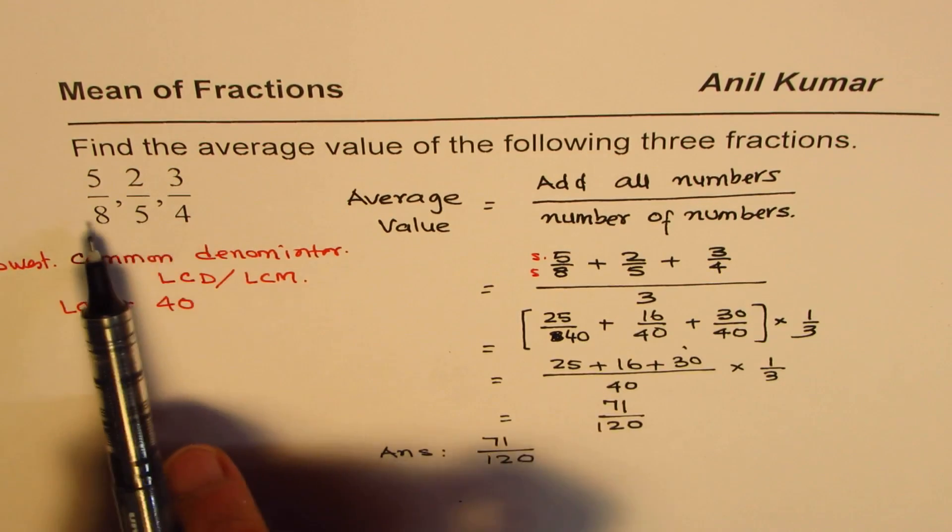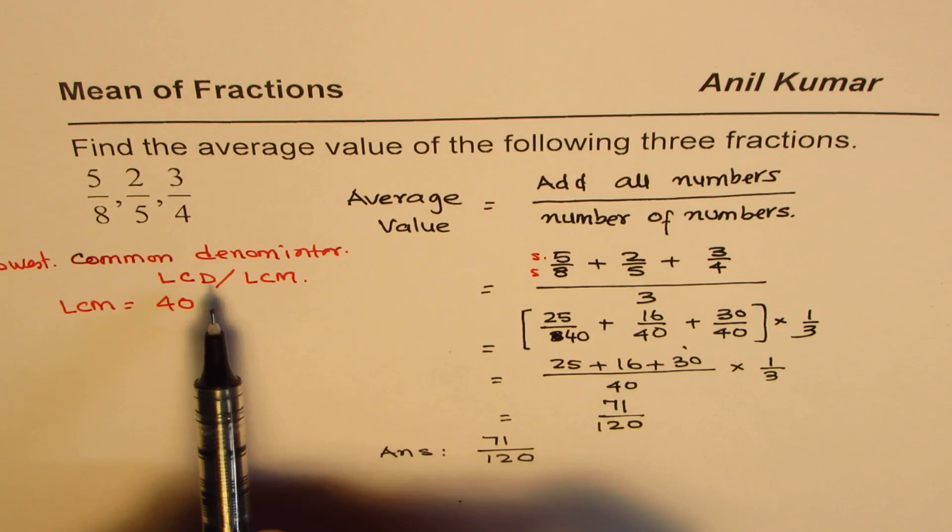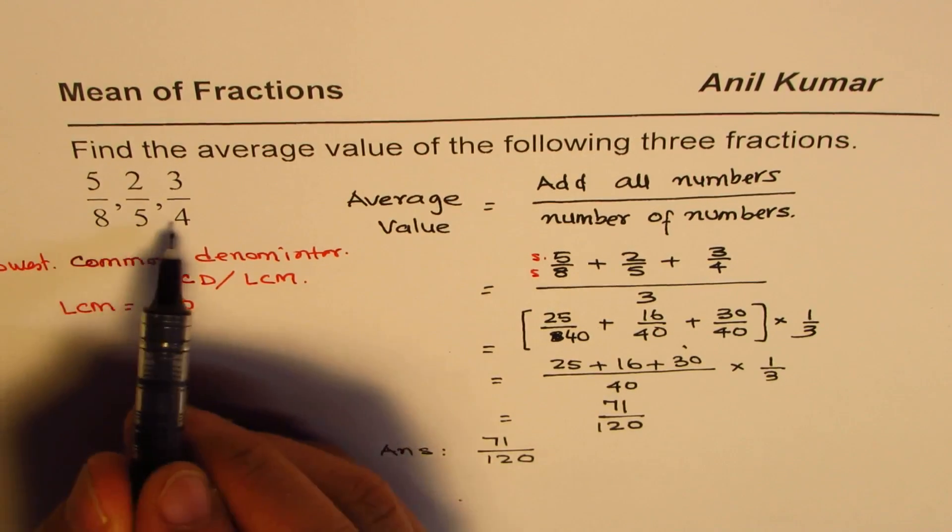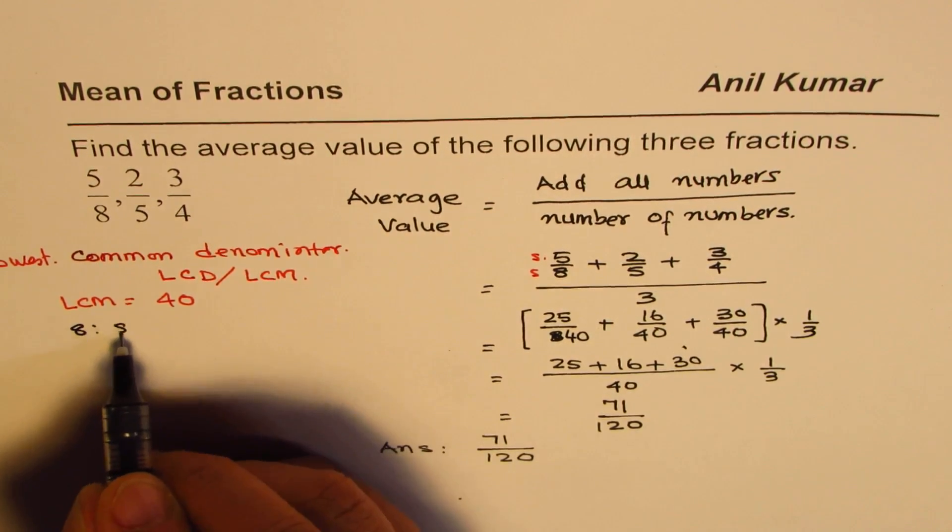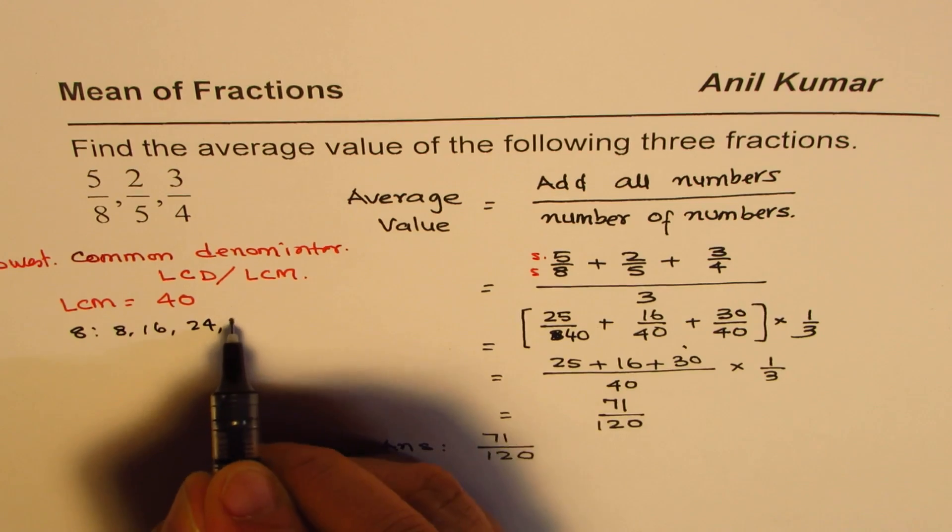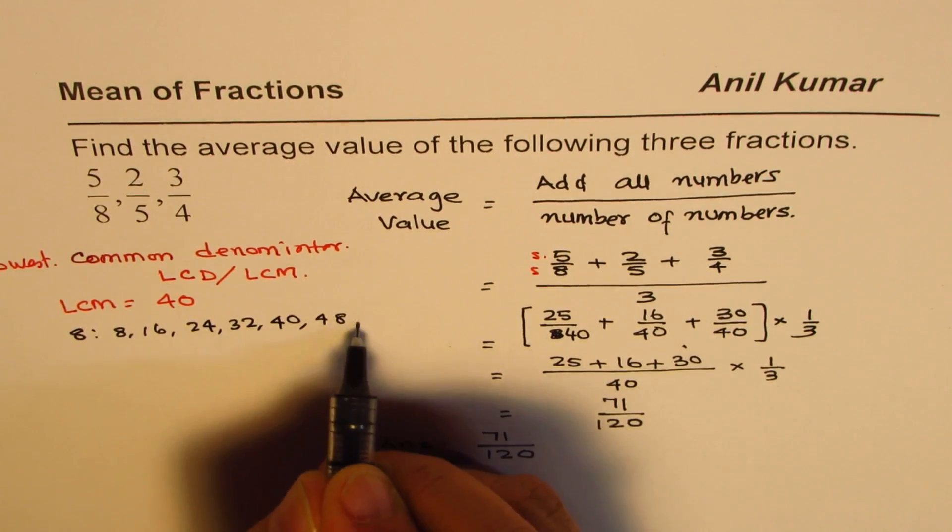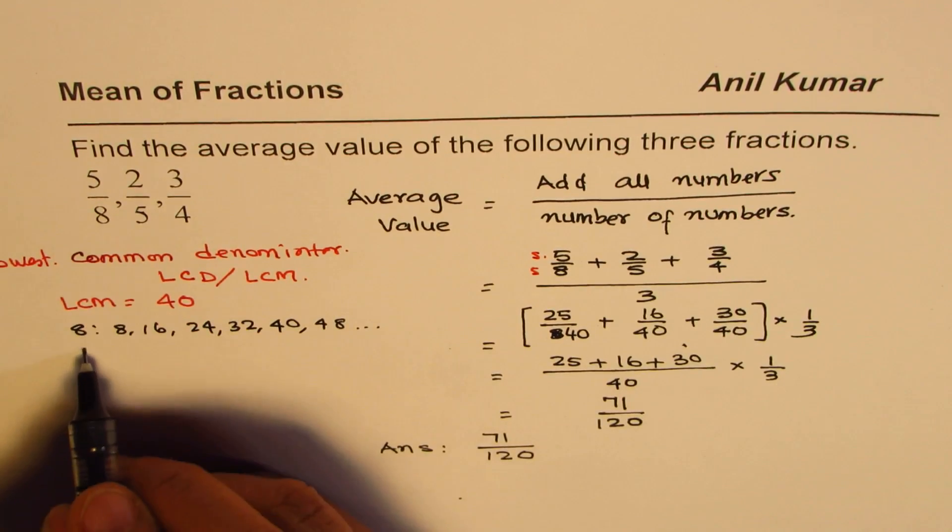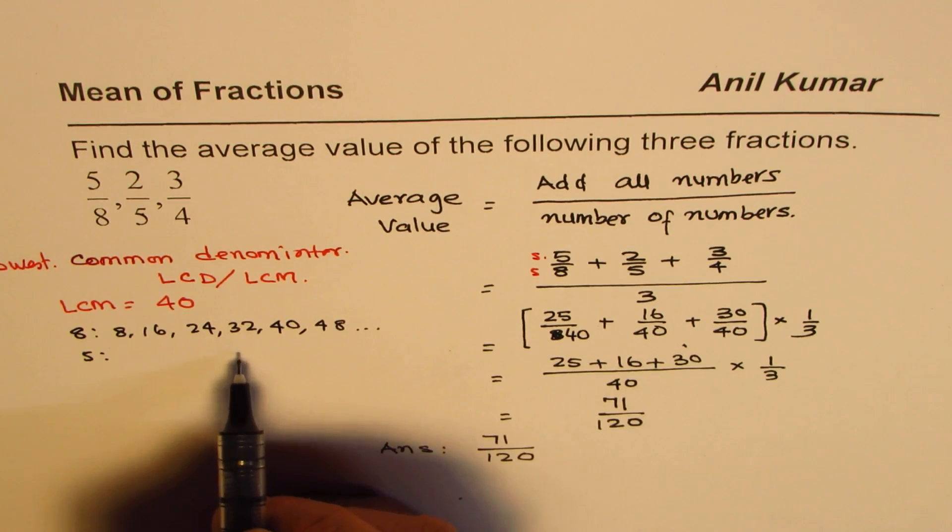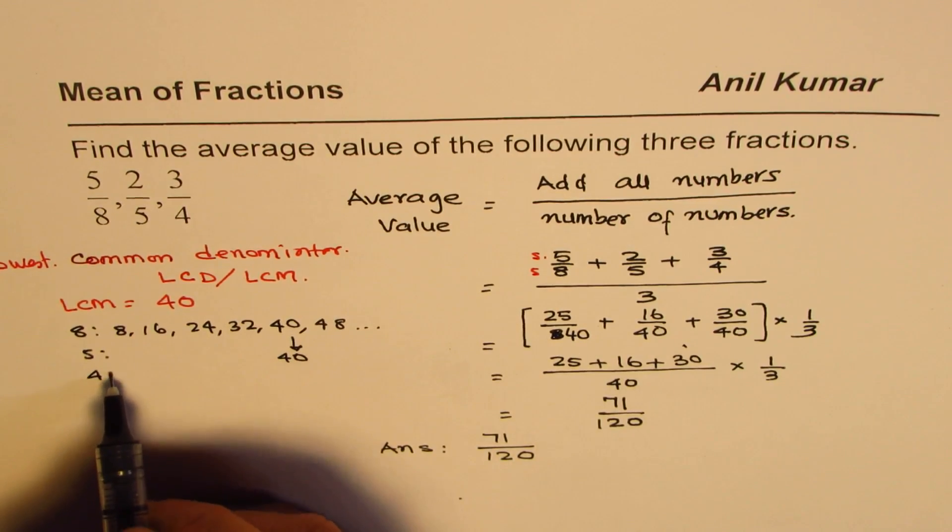To add fractions we should have common denominator—look for lowest common denominator. So how do we do that? We find multiples of each. 8 multiples are 8, 16, 24, 32, 40, 48 and so on. 5 multiples are 5, 10, 15, 20, 25, 30, 35, but we do have 40.